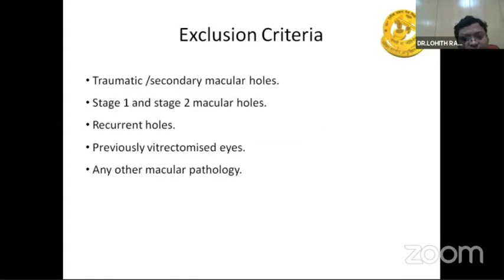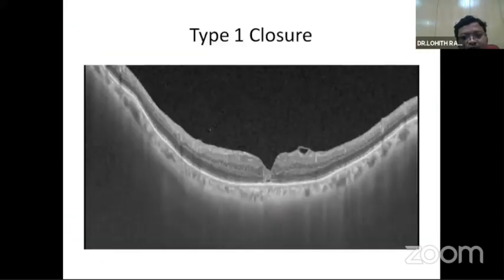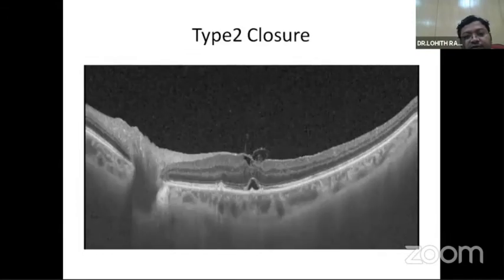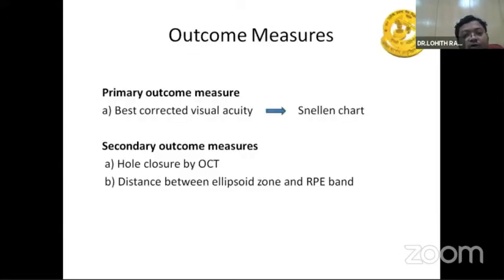Stage 1 and stage 2 macular holes were excluded. Type 1 closure is defined as post-op closure without a foveal defect. Type 2 closure shows a foveal defect and non-closure. Primary outcome measure was BCVA on the LogMAR chart; secondary outcome measures were hole closure by OCT and distance between the ellipsoid zone and RPE band.